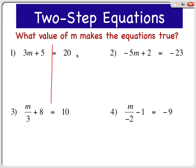So the first thing we're going to do is subtract 5 from each side. We're going to make these 5s cancel out because 5 minus 5 is 0. So all you're left with here is 3m on the left side is going to equal 20 minus 5 is 15.